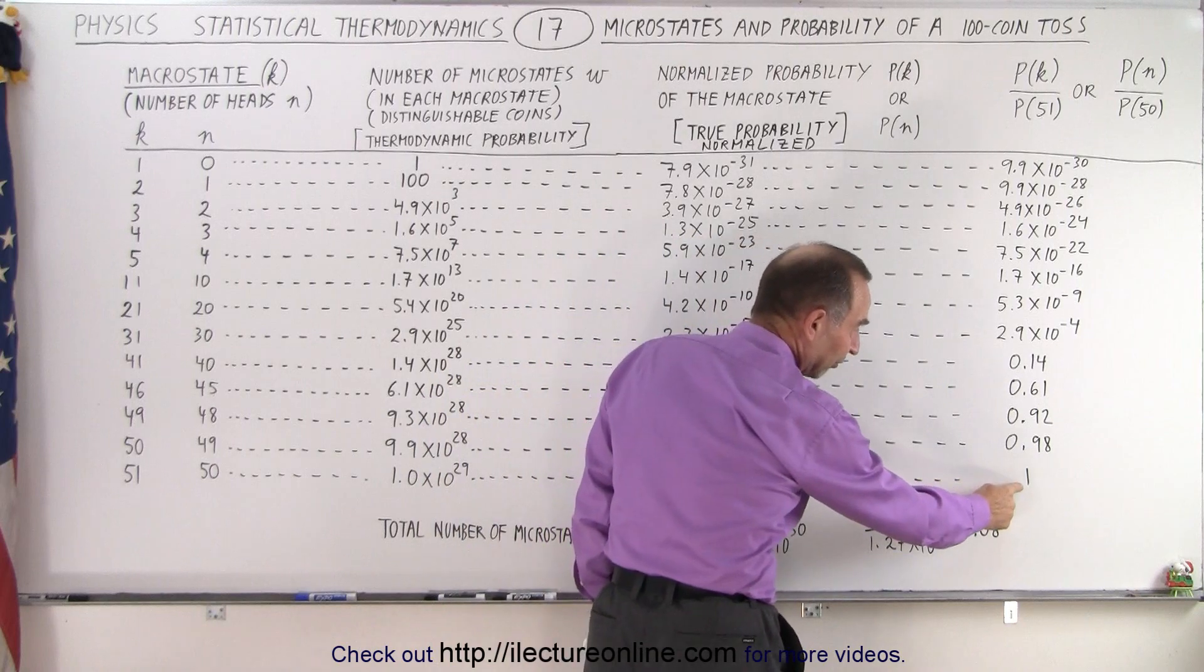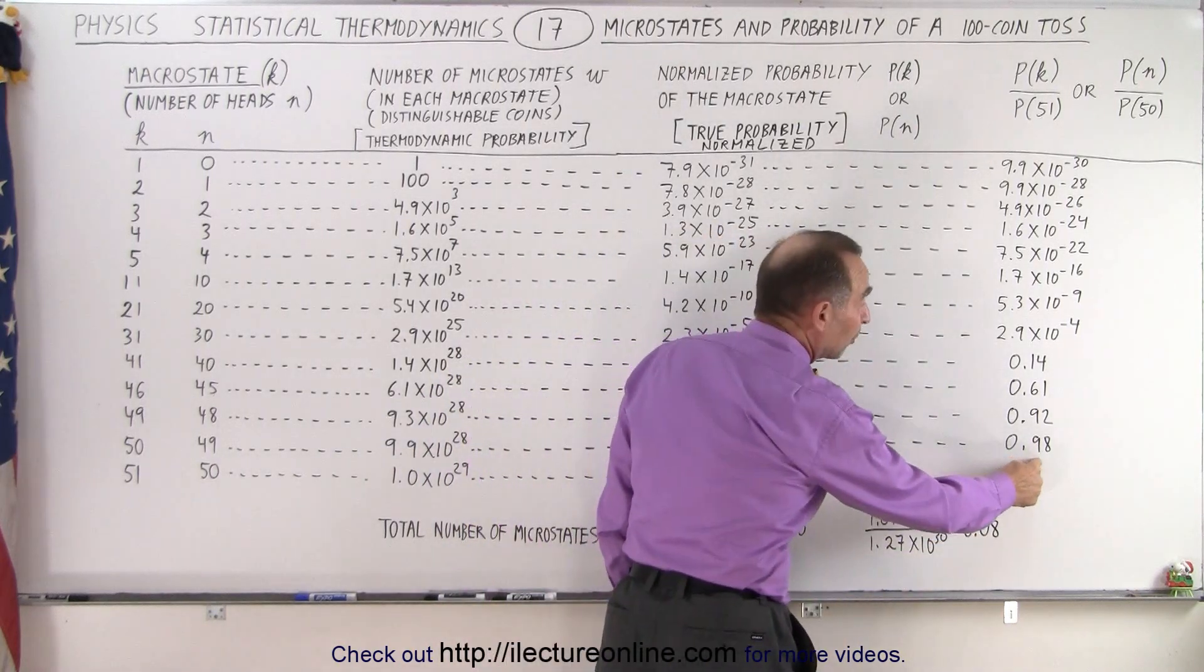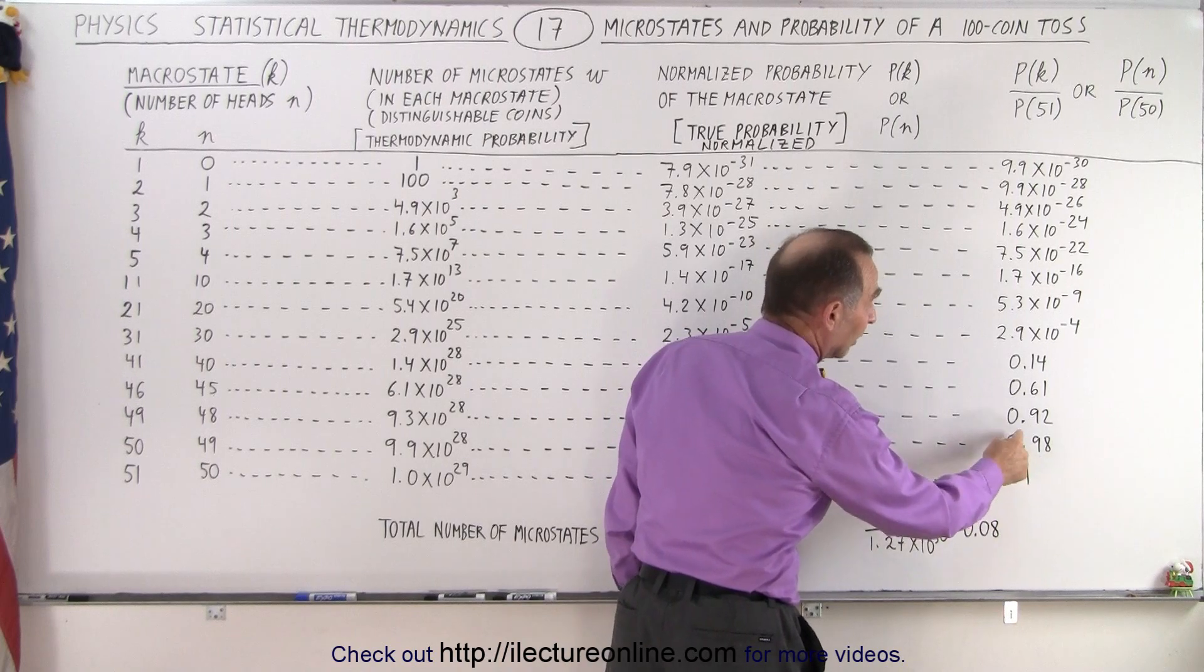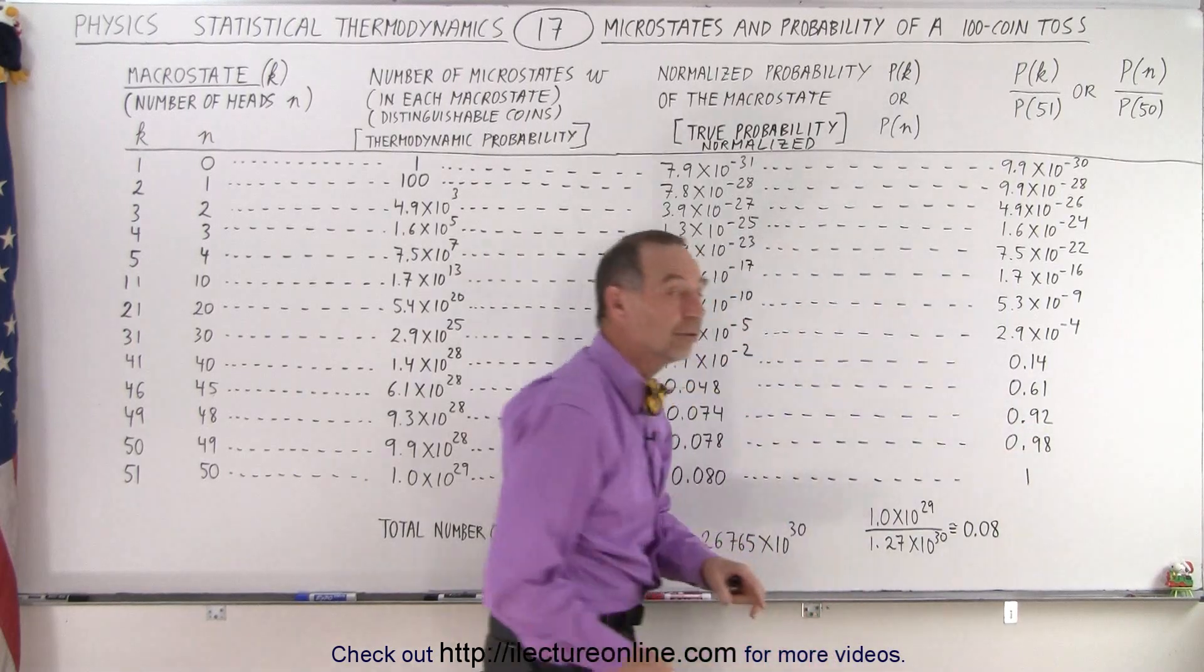And so you can see, of course, for the case of 50 heads, that's 1 to 1. For the case of 49 heads, surprisingly, it's 0.98 to 1. And in the case of 48 heads, it's 0.92 to 1.